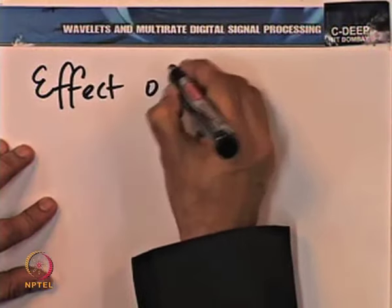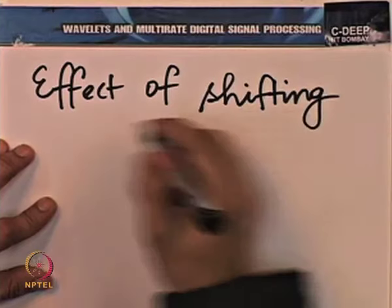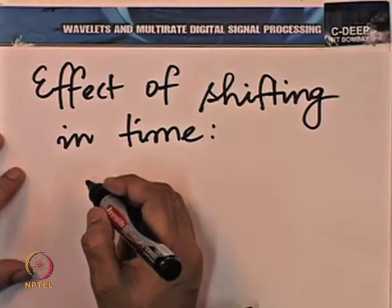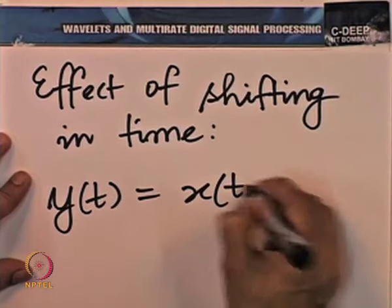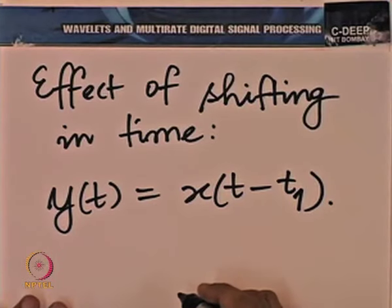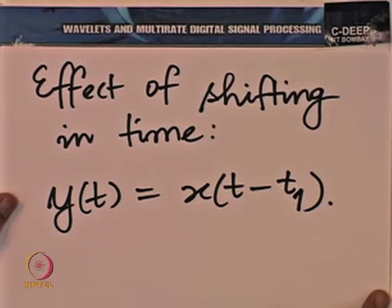Now let us see what happens when we shift a function in time. As we expect, when we shift a function in time there is no change in the magnitude of the Fourier transform — all that happens is that the center shifts. Considering y(t) = x(t − t₁), we can easily write down the corresponding integrals. I shall not go through all the details but will put down the important results.